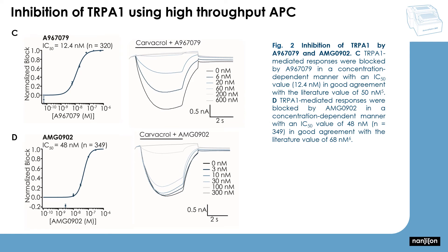Panels C and D show block of TRPA1 by A967079 and AMG0902 respectively. The IC50 for A967079 was 12.4 nanomolar for an average of 320 wells, and for AMG0902 it was 48 nanomolar for an average of 349 wells, both in good agreement with literature values.